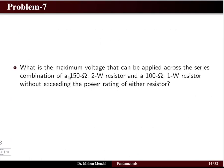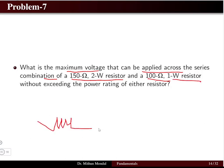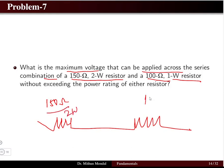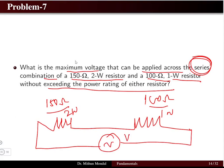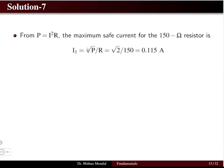Problem seven: what is the maximum voltage that can be applied across a series combination of a 150-ohm 2-watt resistor and a 100-ohm 1-watt resistor, without exceeding the power rating of either resistor?